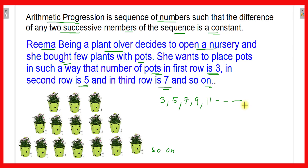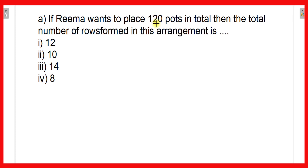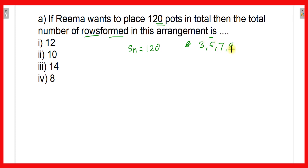The first question: if Rima wants to place 120 pots in total, the total number of rows formed in this arrangement is — 12, 10, 14, or 8? Since Rima wants to place 120 pots, Sₙ = 120. Our AP is 3, 5, 7, 9, and so on, so the first term a = 3 and the common difference d = 5 − 3 = 2.